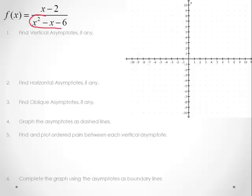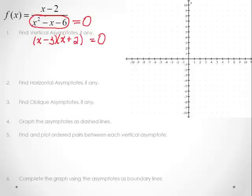In this case, we have a denominator of x squared minus x minus 6, and we want to see when that equals 0. This is an example that factors, so I'm just going to go ahead and factor it into x minus 3 times x plus 2, and we're setting it equal to 0. We're going to get two results from here.